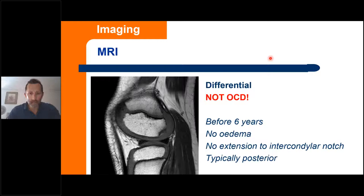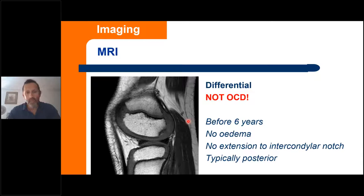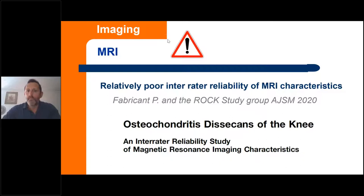You should be aware of what is not OCD. Irregular ossification of the condyles is a differential diagnosis, usually found before the age of six years. In this case there is no edema, the abnormal signal is never extended to the intercondylar notch, it is typically posteriorly located, and the patient is asymptomatic or complains of pain from a different origin. Peter Fabricant and the ROC study group recently warned about the relatively poor inter-rater reliability of MRI signs for OCD instability — an important paper published recently in AJSM.